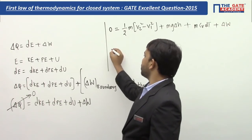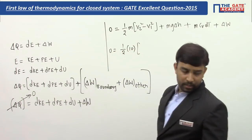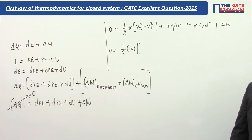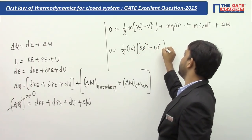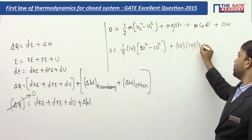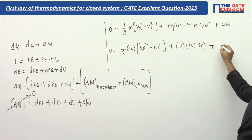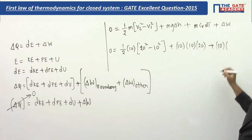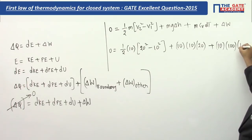Substituting the values: velocity increases from 10 m/s to 20 m/s, mass is 1 kg, acceleration due to gravity is 10, change in elevation is 20 meters, Cv is 100 J/kg·K, and change in temperature is 1 Kelvin. Plugging all of these into the equation gives us the work interaction.